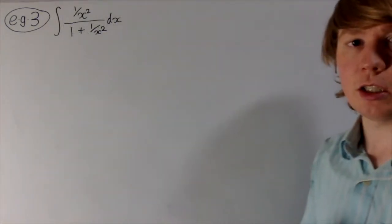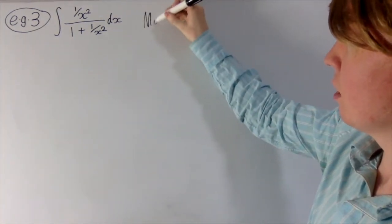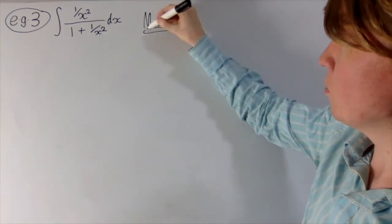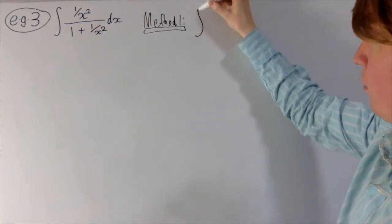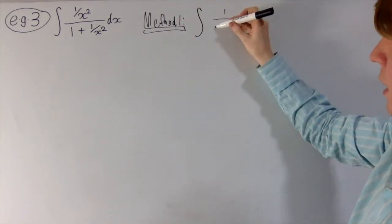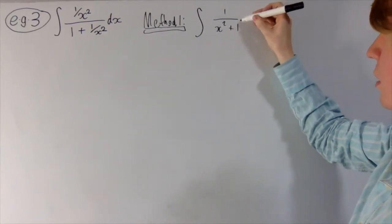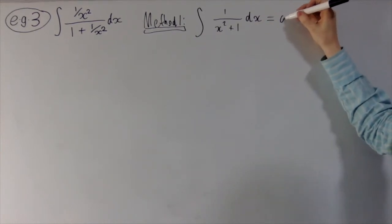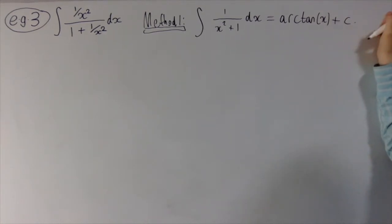This third example is going to lead us to quite an interesting identity. Method one is straightforward: we multiply the top and bottom of the fraction by x squared. Multiplying through, this becomes a very familiar integral in disguise — it's just arctan(x) plus some constant c.